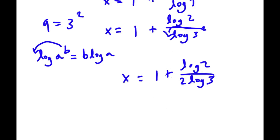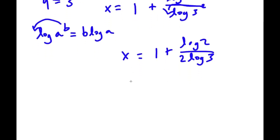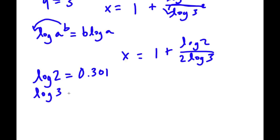So now I have x is equal to 1 plus log 2 over 2 log 3. Now log 2 is equal to approximately 0.301, and log 3 is equal to approximately 0.4771.